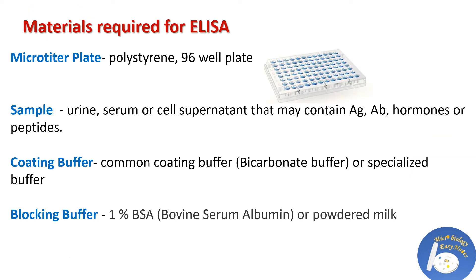Now, the materials required for ELISA: first is a micro titer plate, which is made up of polystyrene and has 96 wells. Second is the sample — that sample can be any biological fluid like urine, serum, or cell supernatant. These samples may contain antigen, antibody, hormones, or peptides. Next is coating buffer.